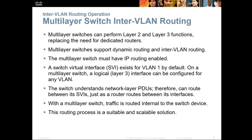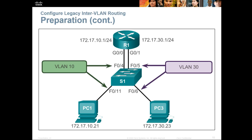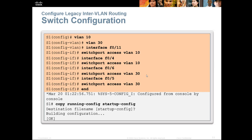Legacy inter-VLAN routing requires routers with a physical interface per link per connection. Each router interface is connected to a unique VLAN and configured with an IP address. For example, these links are all VLAN 10, these links are all VLAN 30 — not a great idea, but that was the old way. To configure it, you would create the VLANs first, then navigate to each interface and hardcode it: 'switchport access vlan 10'.